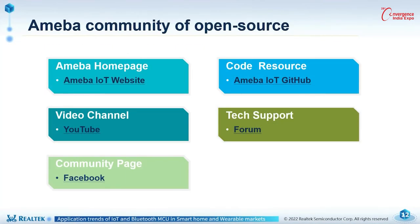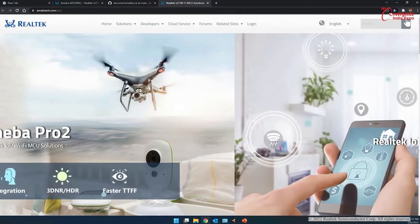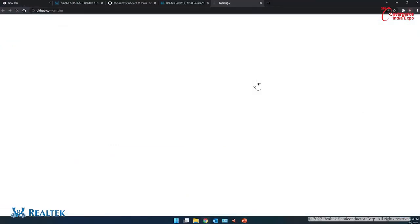We do have our community for open source. Let me show them one by one. First, our homepage — it has all the information you need to use Amoeba IoT, including SDK, API examples, and so on. Next is the cloud resource, which is the GitHub channel. As I explained previously, it has all resource codes stored online.